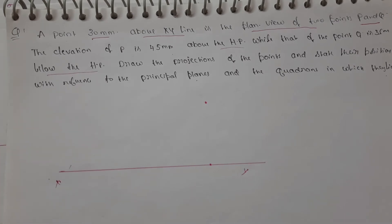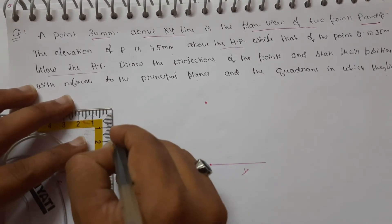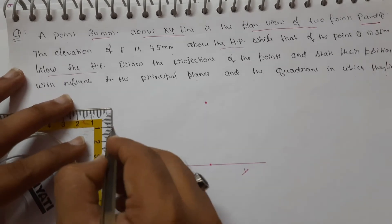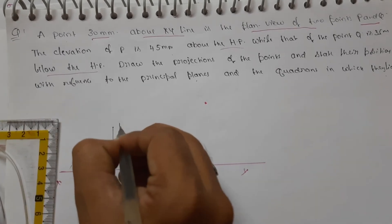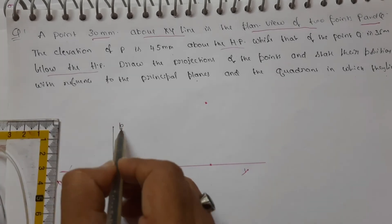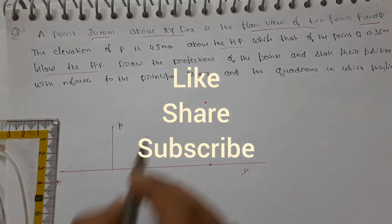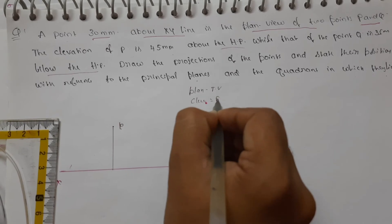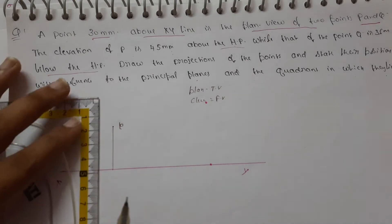The plan view of two points P and Q is 30mm above the XY line. The elevation is 45mm above HP.